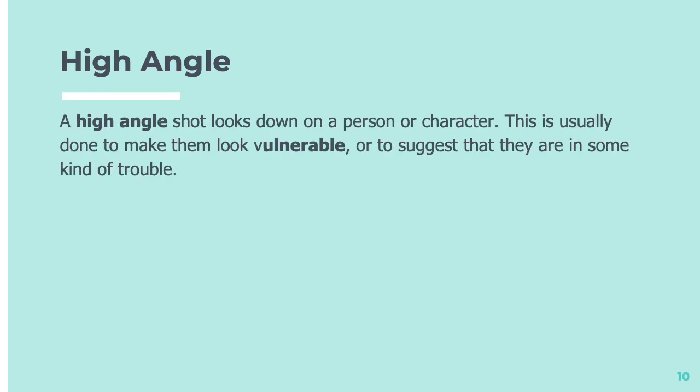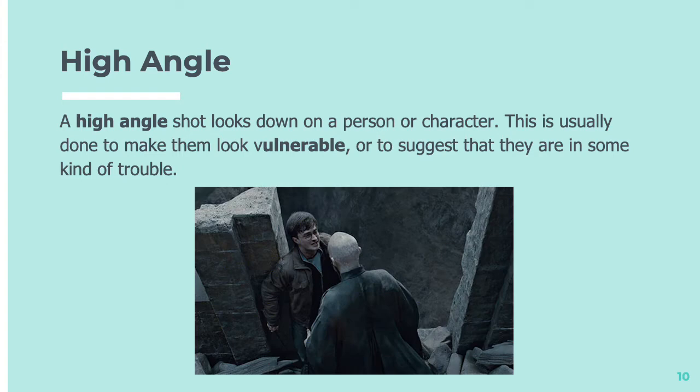High angle, so we're nearly there. High angle shots look down on a person or a character and this is usually done to make them look vulnerable or to suggest that they might be in some kind of trouble. It's as though they're high up looking down on the character.